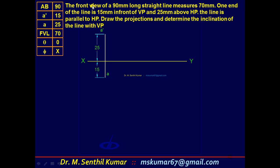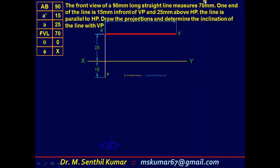The front view of the 90mm long straight line measures 70mm, and since it is parallel to HP, the front view will be a line parallel to XY. The length of the front view is given, so you start there — through a', draw a line parallel to XY to a length of 70mm. That is the final front view: a'b' = 70mm.